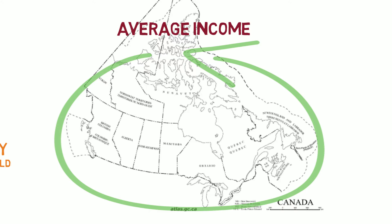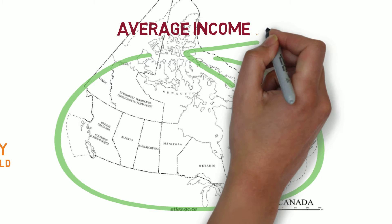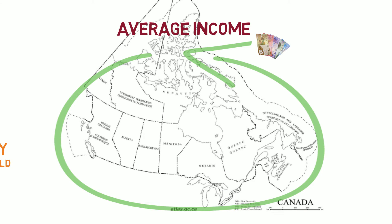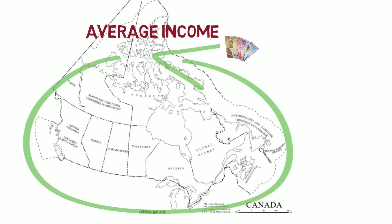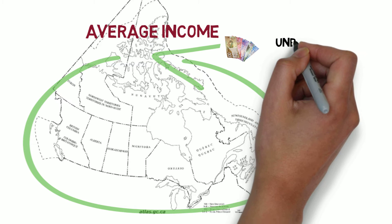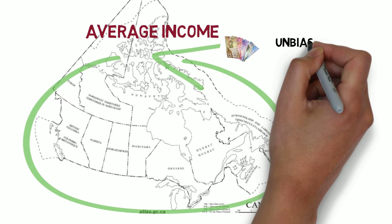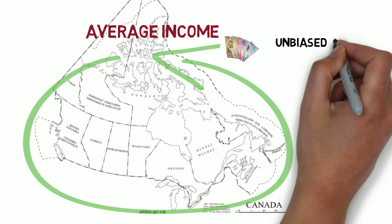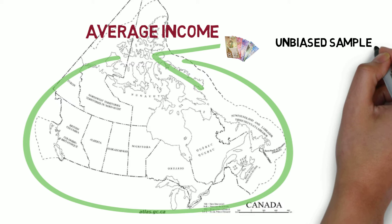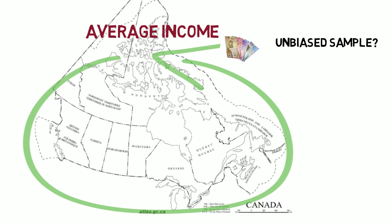Mandatory censuses, which have been used in Canada and around the world, aim to get responses for everyone in the country. But if it is too costly to survey everyone, then we can get an estimate of the adult mean income by surveying a sample of the population. The key issue is the conditions under which a given sample will provide an accurate or unbiased estimate of the population mean.